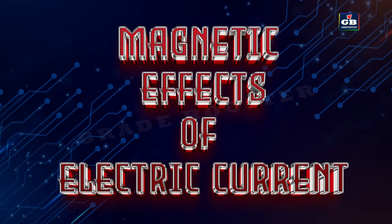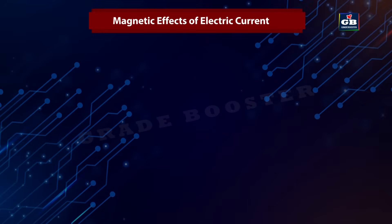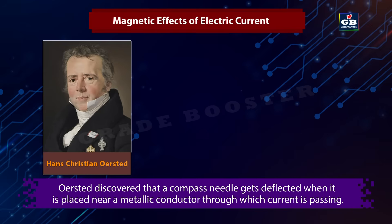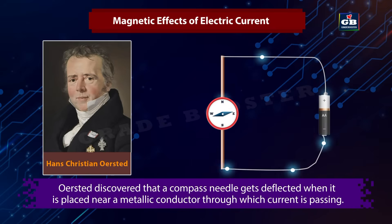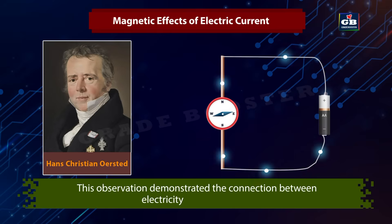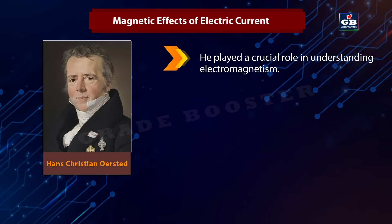Magnetic effects of electric current. In 1820, Hans Christian Oersted, one of the leading scientists, accidentally discovered that a compass needle gets deflected when it is placed near a metallic conductor through which current is passing. This observation demonstrated the connection between electricity and magnetism, meaning he played a crucial role in understanding electromagnetism.